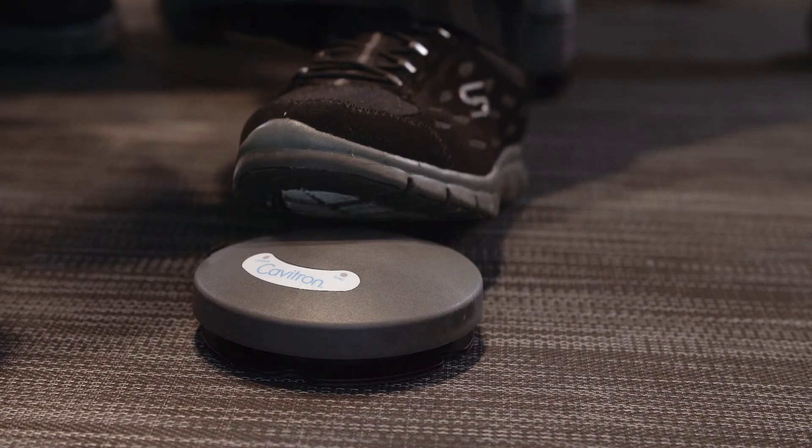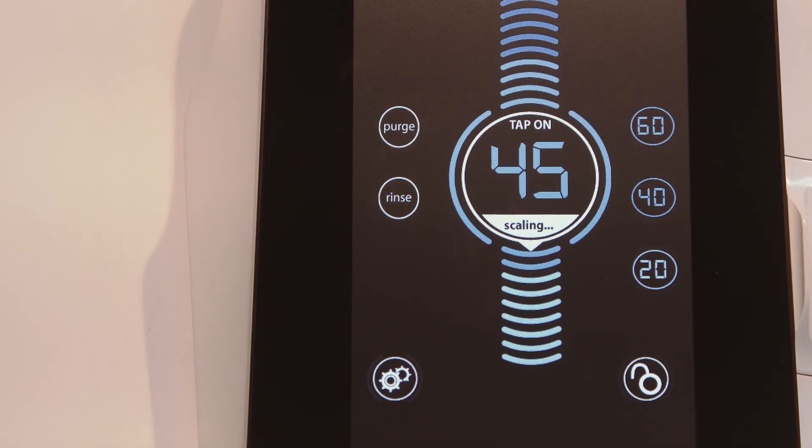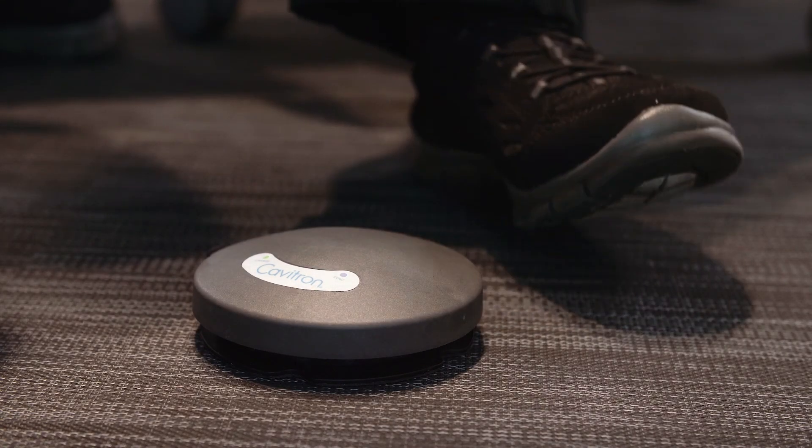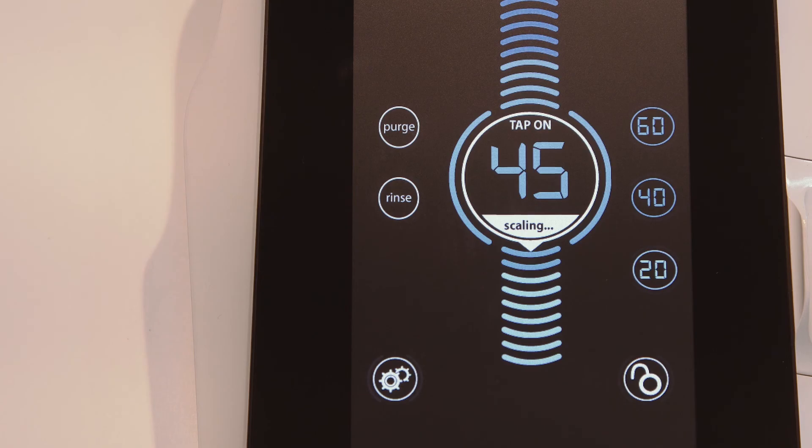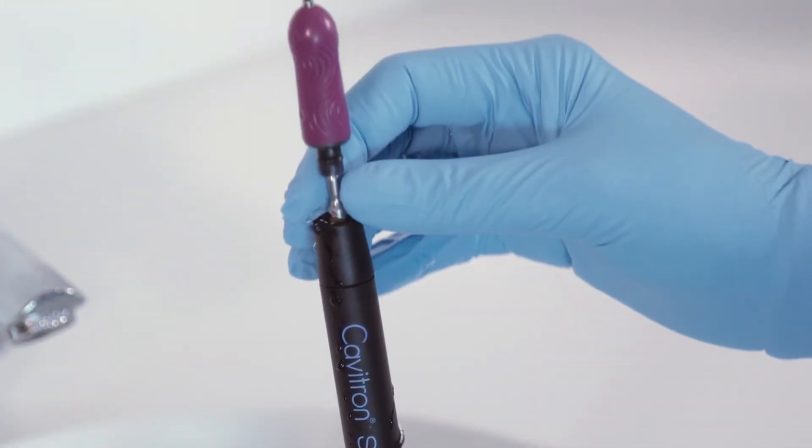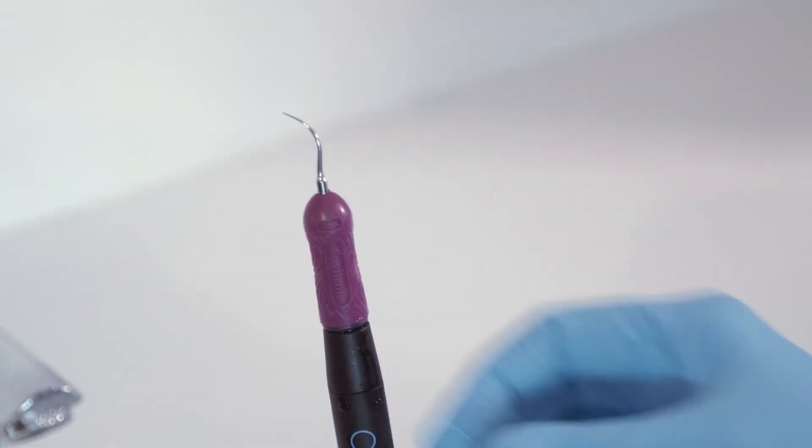With tap on technology activated, tapping on the foot pedal once will activate ultrasonic power for approximately four minutes. Tapping the foot pedal a second time will disable ultrasonic power and water flow. On the main scaling screen, a tap on indicator will appear in the power level display while scaling. Please note that tap on technology only operates when an insert is seated in the handpiece.